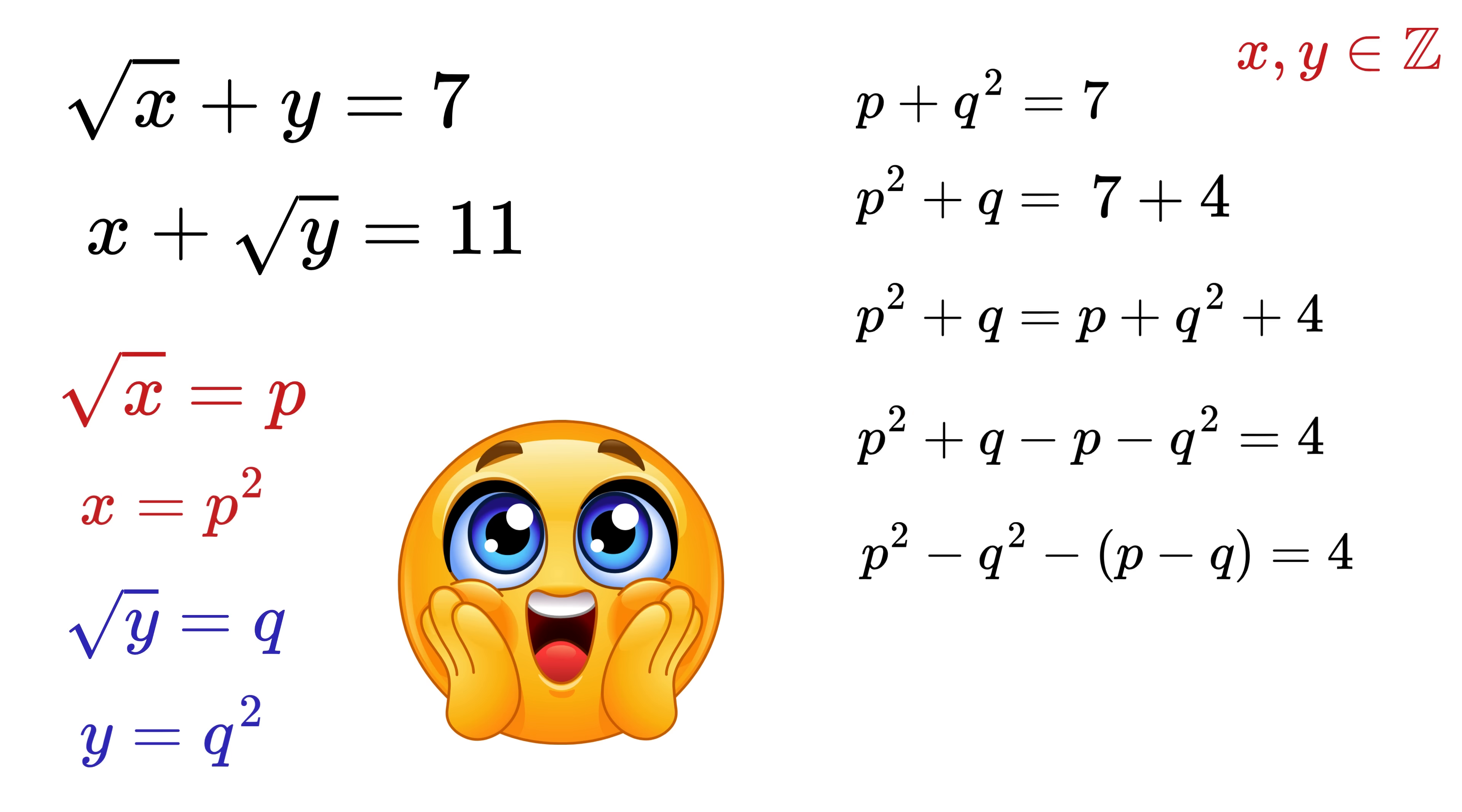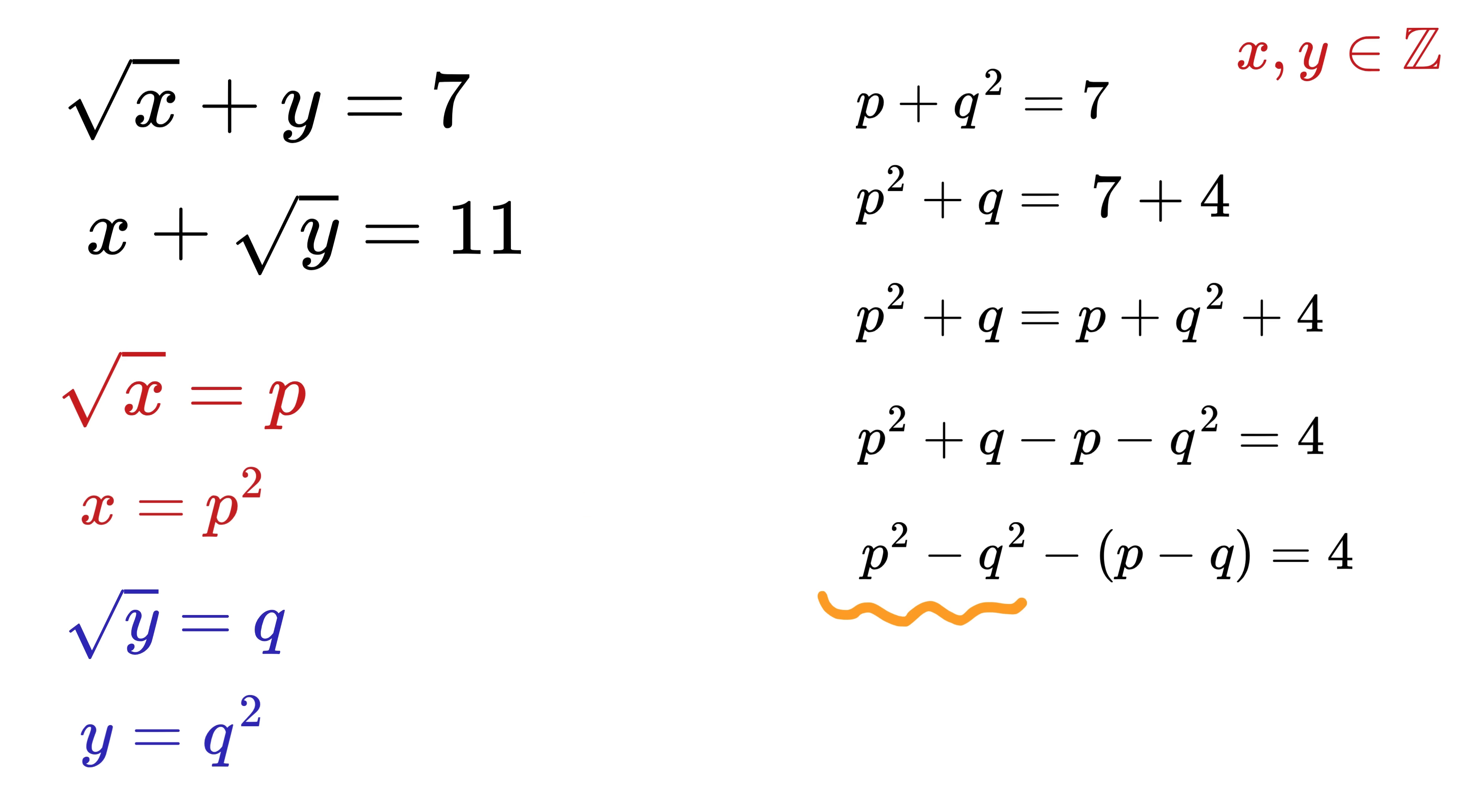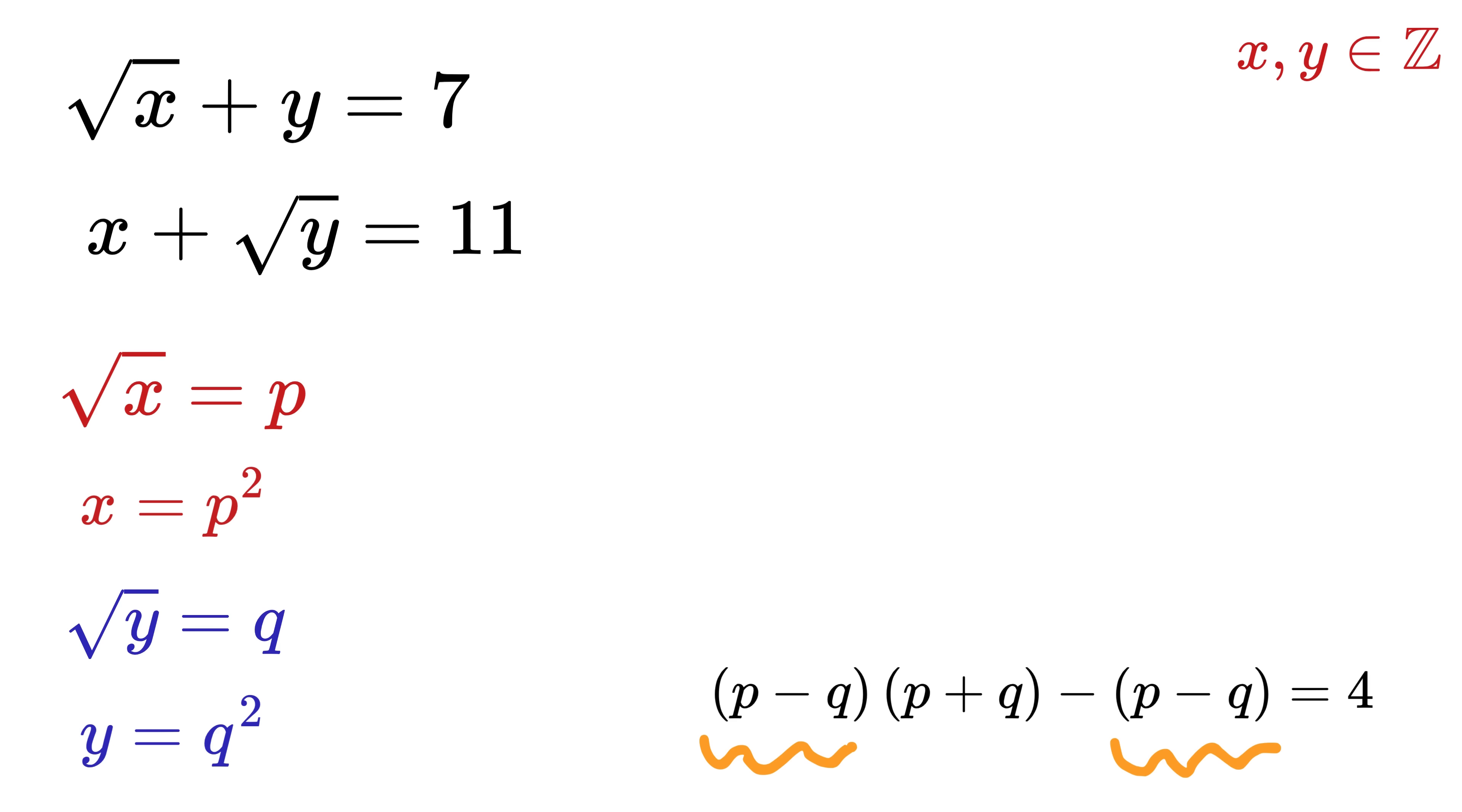Wow, can you also notice the same thing that I can see? Yes, this thing is the same as the difference of square term, and we can rewrite it as (p minus q) times (p plus q). Whoa man! Now we can take (p minus q) as common from them to get (p minus q) times (p plus q minus 1) equals 4.